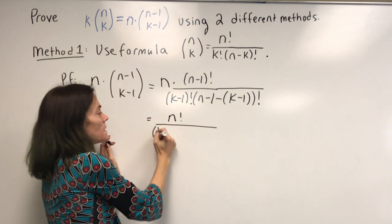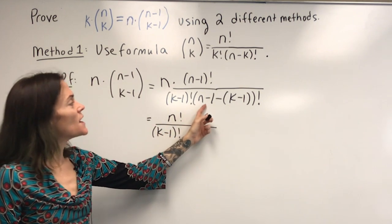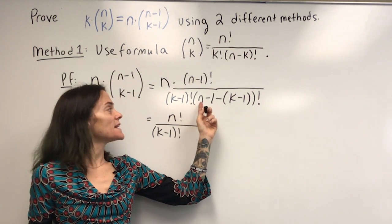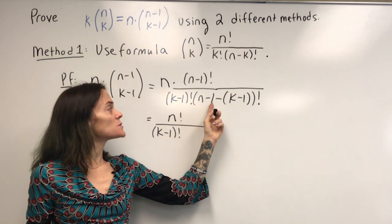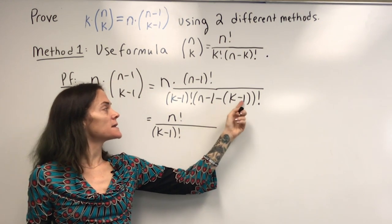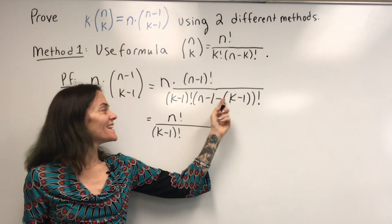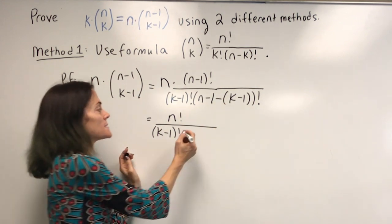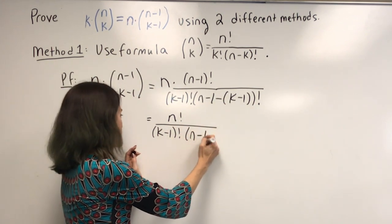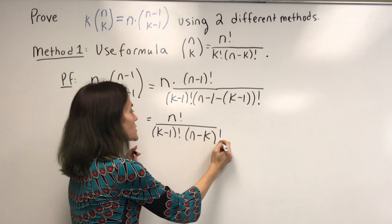There's not much I can do with the k minus 1 factorial term. But in the other factor, I have n minus 1 and then a minus minus, which is a plus 1, then minus k. So this simplifies to n minus k factorial.